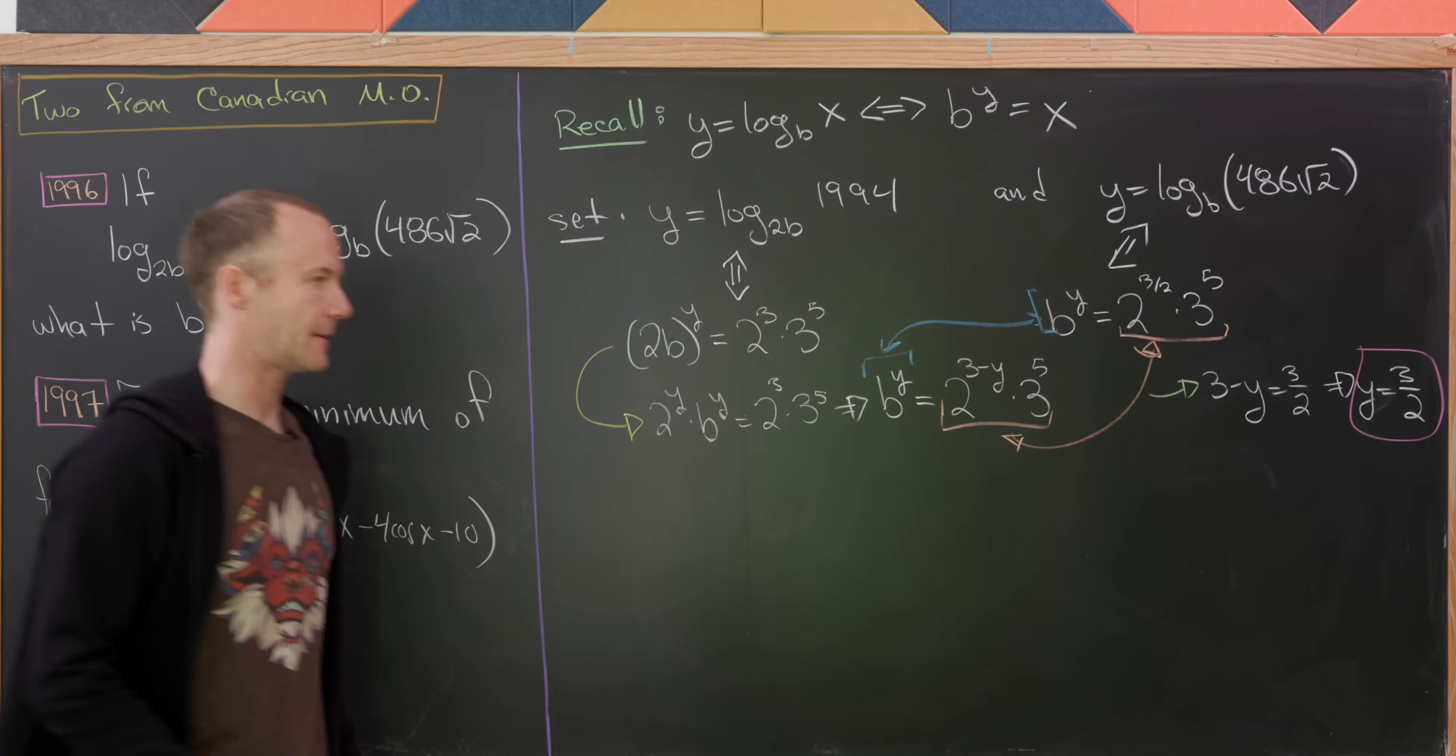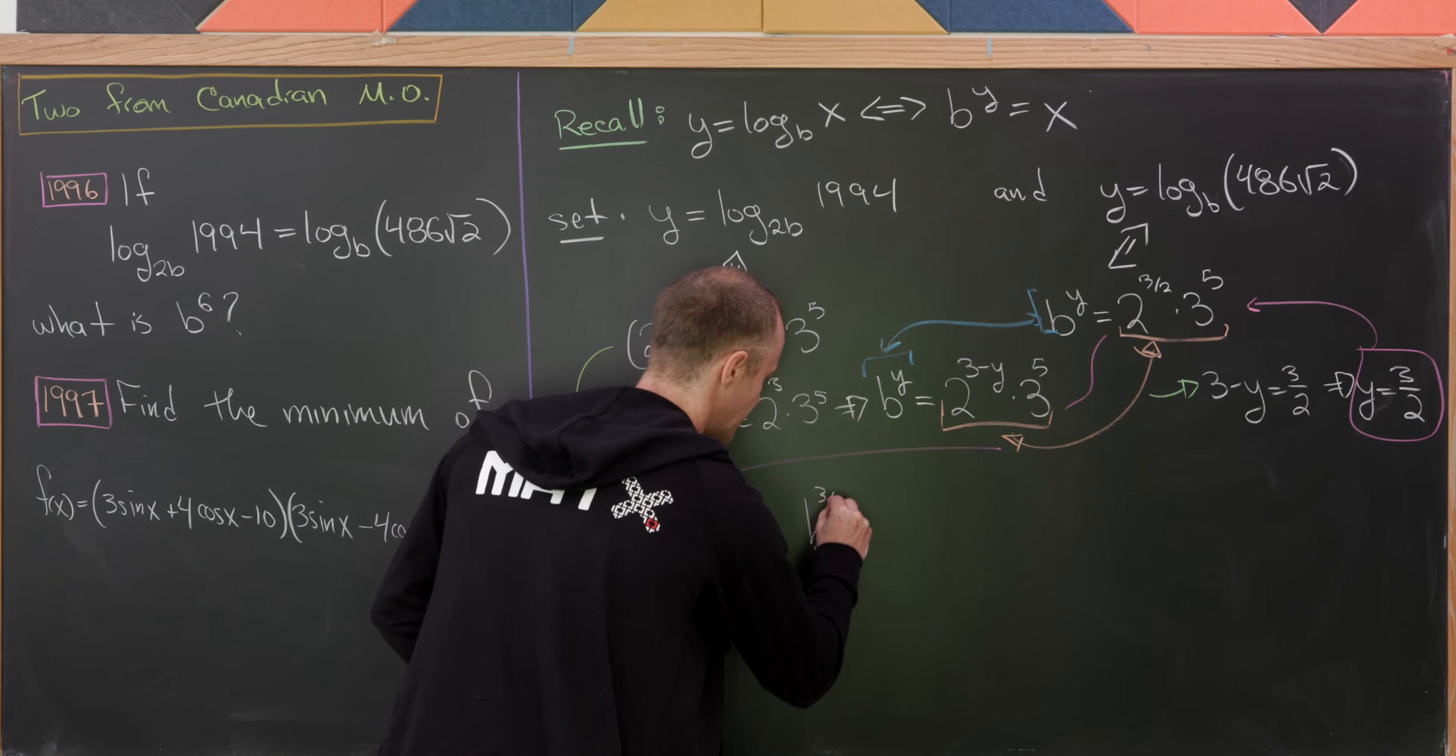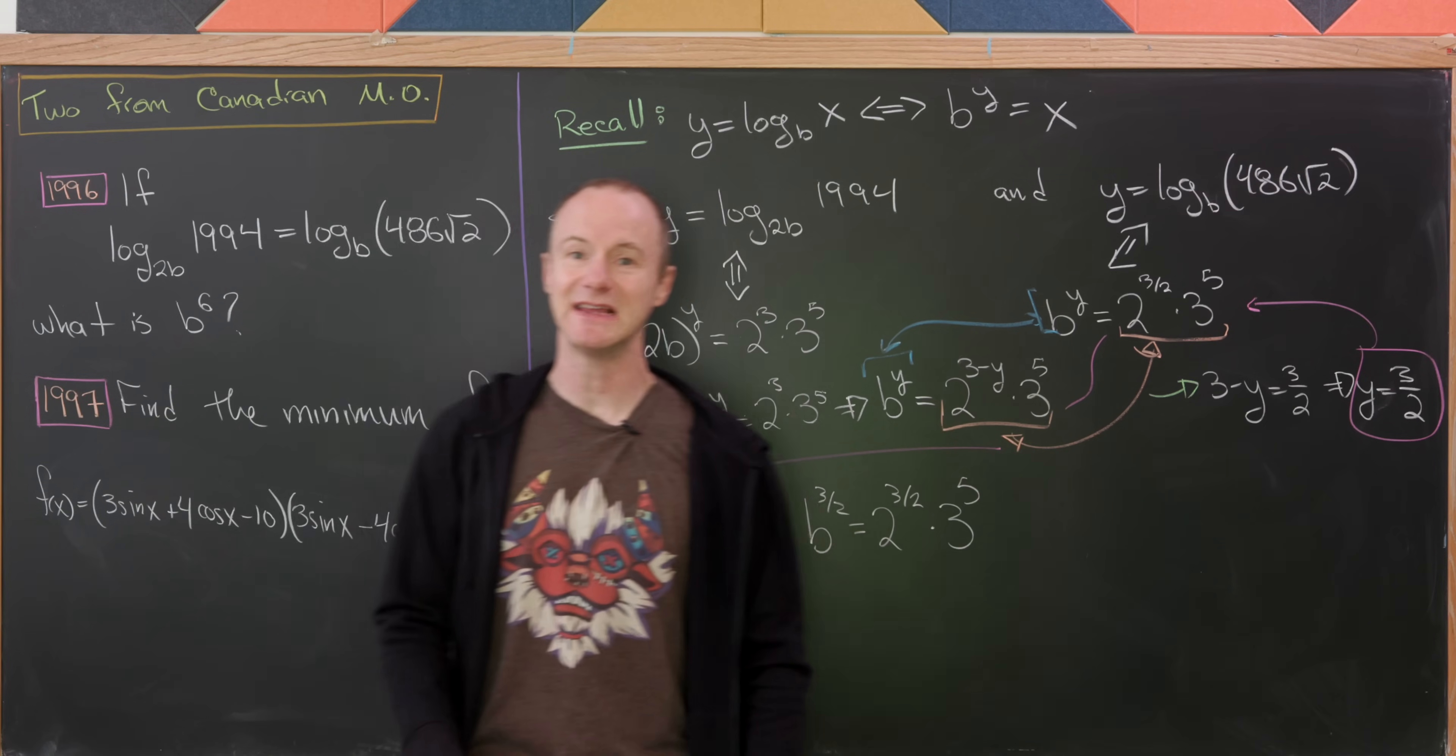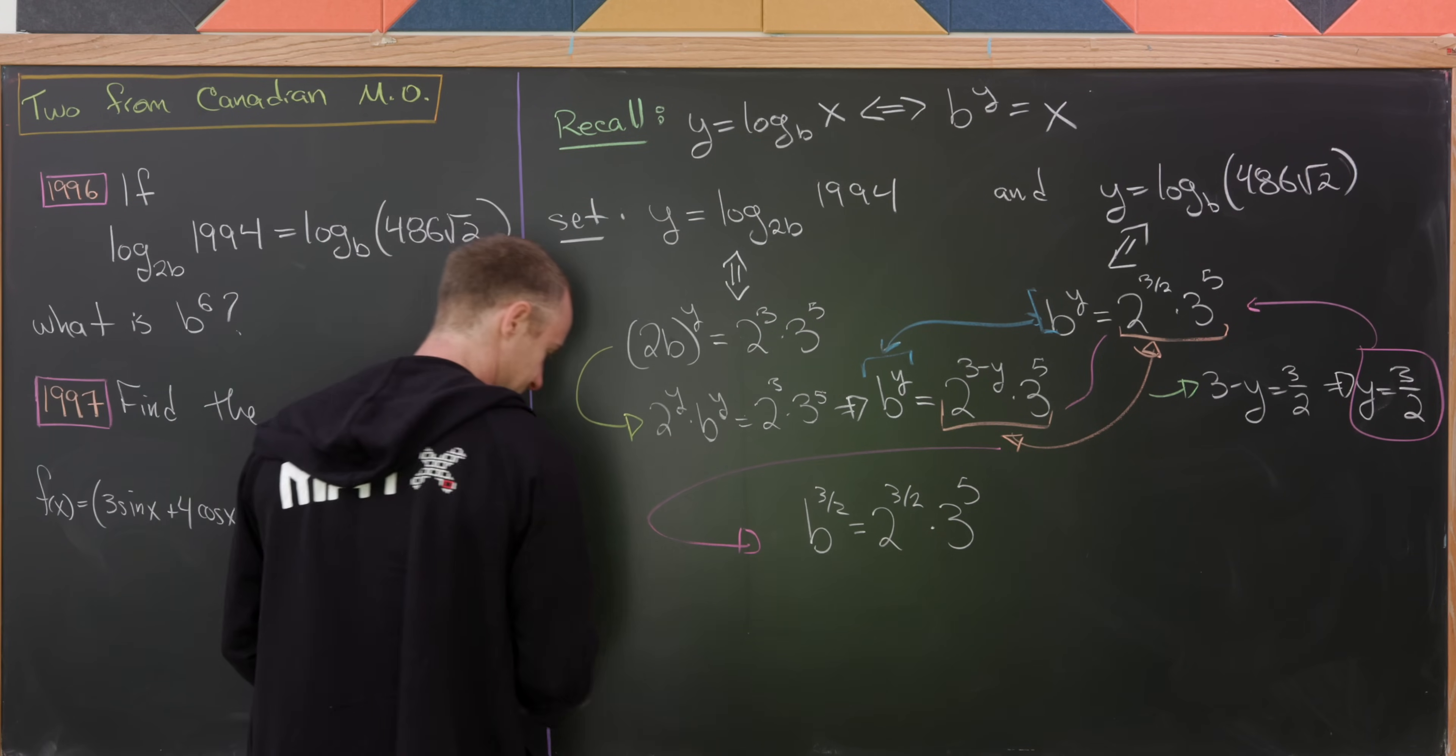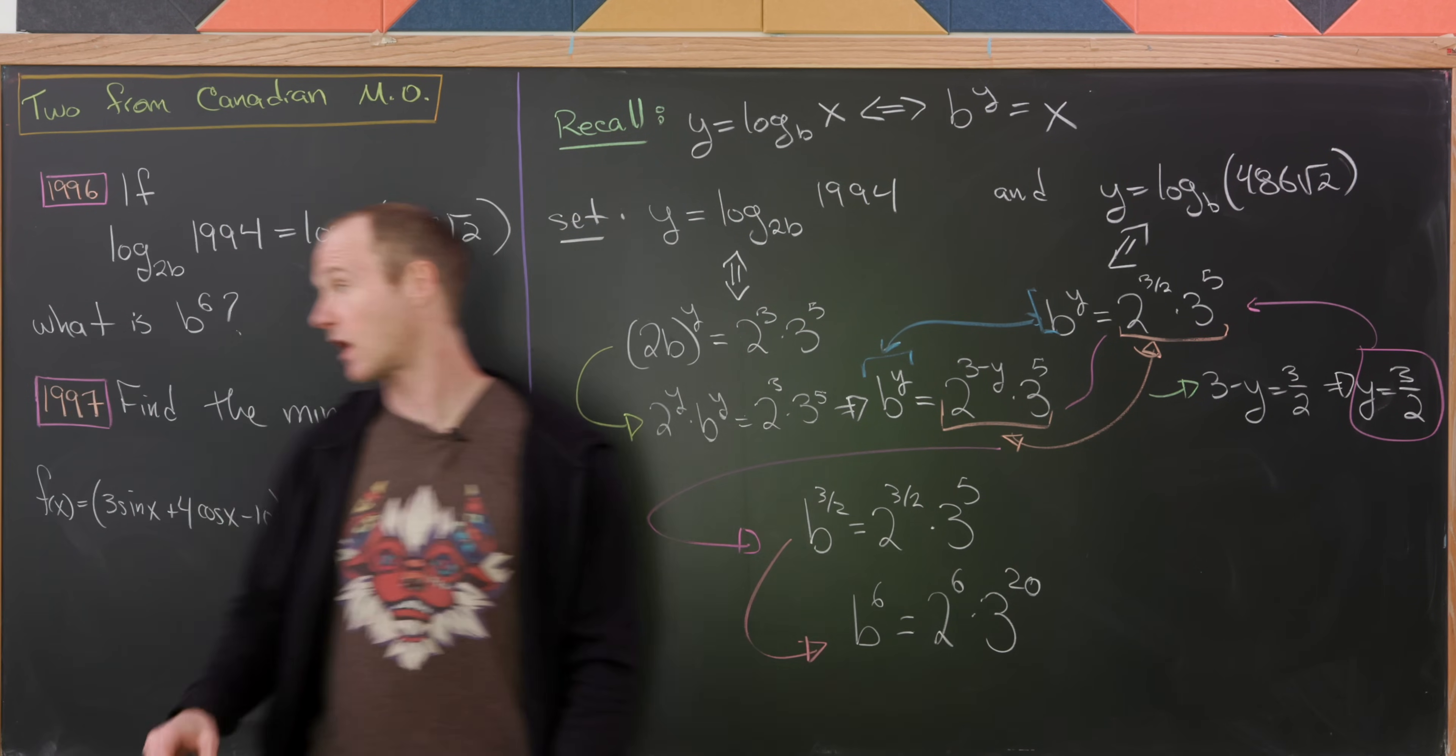So now let's put a little box around that. And then what we'll do from here is plug that into perhaps this equation. So plugging that into this equation, we have b to the 3 halves is equal to 2 to the 3 halves times 3 to the 5th. But let's look at our goal. Our goal is b to the 6th power. So what we'll do to achieve b to the 6th power is raise both sides of this equation to the 4th, because 4 times 3 halves is 6. If you raise this to the 4th power, you're going to have b to the 6th as needed. And here you're going to have 2 to the 6th times 3 to the 20. So there you've got it. We finished our first problem.